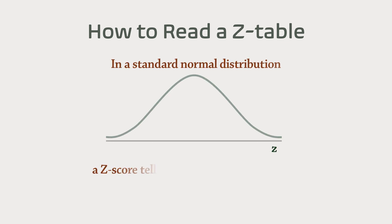In a normal distribution, a z-score tells us how far a value lies from the mean, measured in standard deviations.